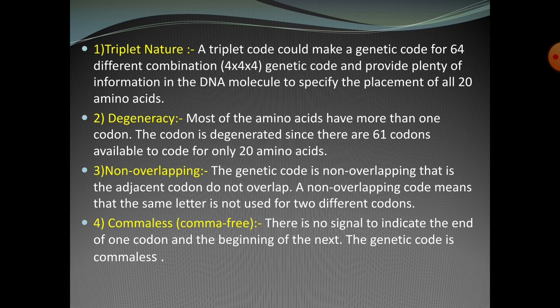The triplet codon can make 64 different combinations for the genetic code, providing ample information in the DNA molecule to specify the placement of all 20 amino acids. The triplet codon is a continuous sequence of three bases read on the mRNA.